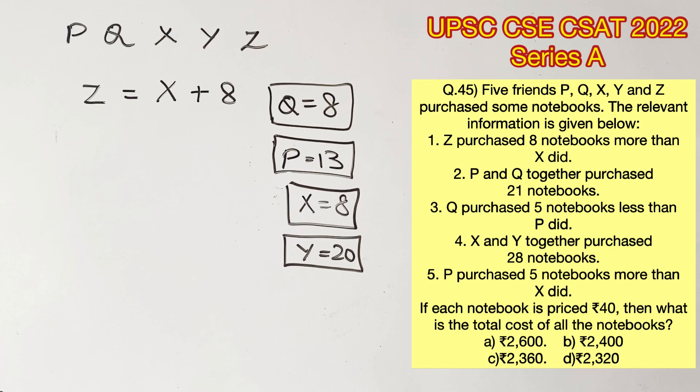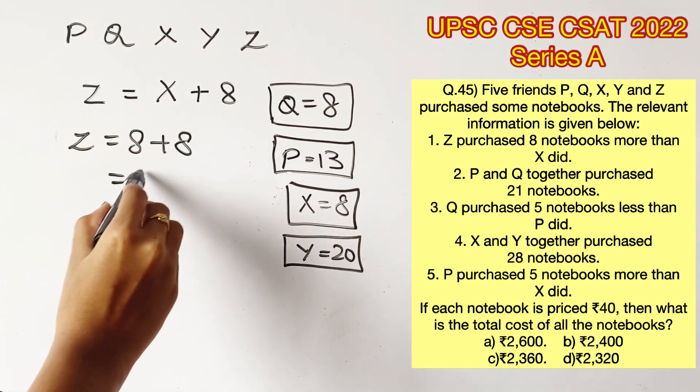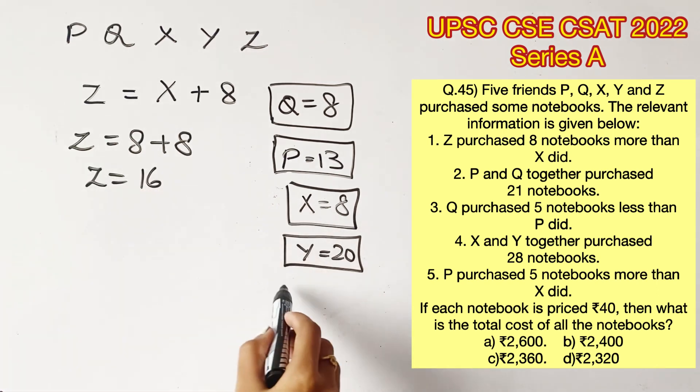Then we have the last statement where we can substitute the value of X as 8. So Z is equal to 8 plus 8, which is 16.